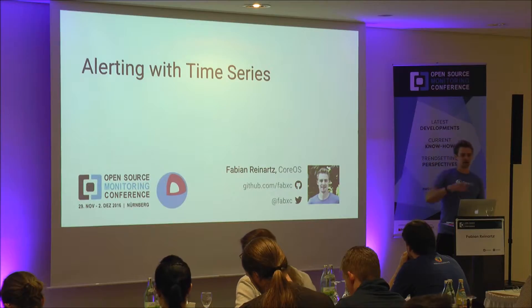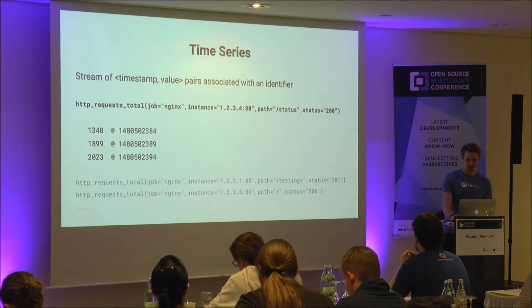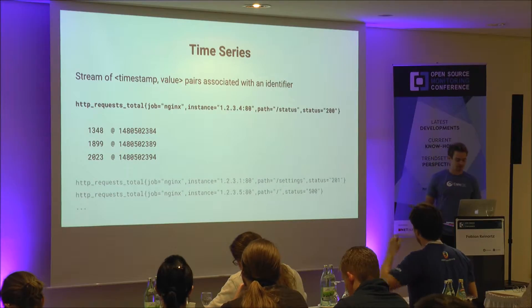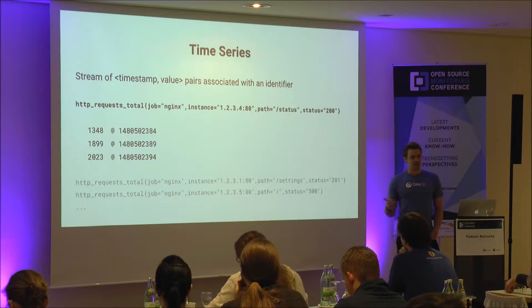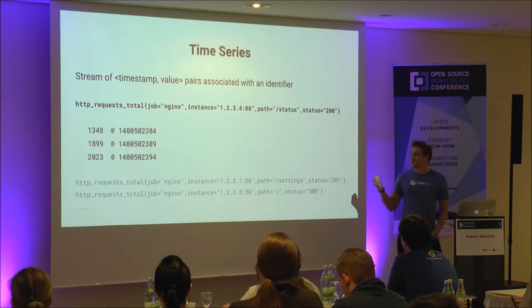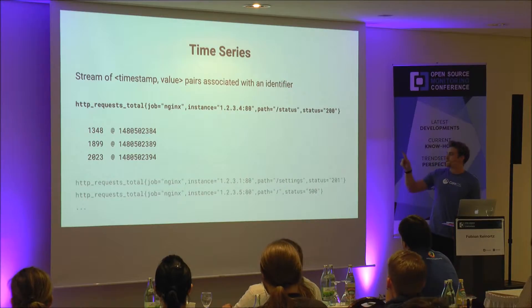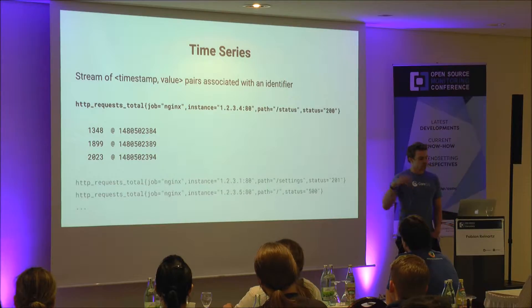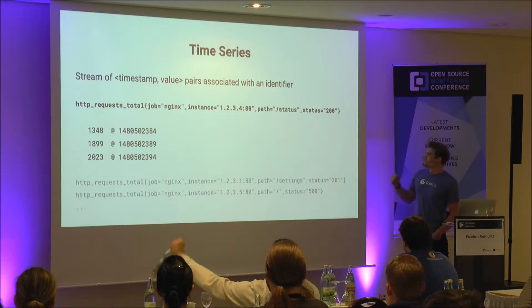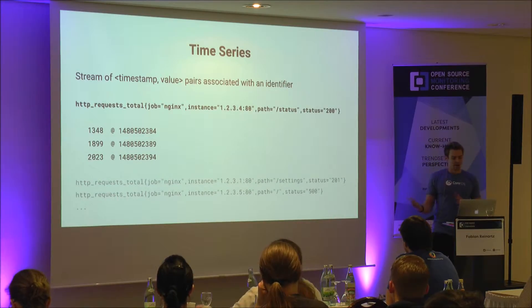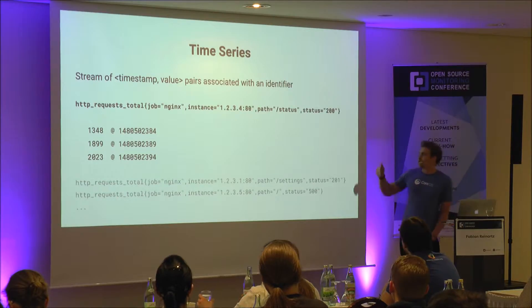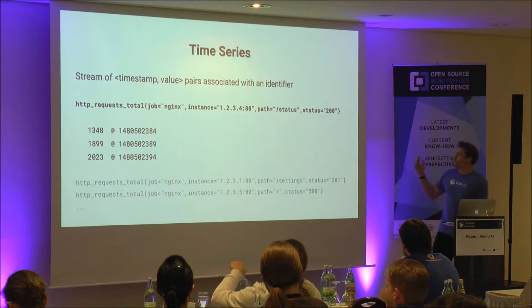If you have any questions in between, just raise your hand. So first of all, what's a time series? A time series is just a stream of values associated with one timestamp for each value, coupled with some identifier. In Prometheus, each time series is identified by a metric — in this case HTTP request total — and then you have labels, which are dimensions to this metric. Each unique combination of label values is a single time series. If I change the status to 500, that's a new time series. We can easily see this blows up quickly — hundreds of thousands of time series across 100 instances, 10 request paths, and all possible status codes.